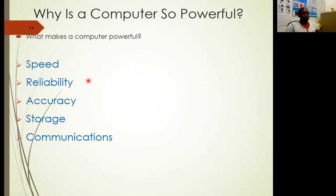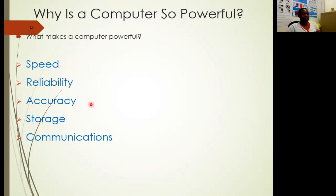So what makes the computer a powerful tool? The computer is powerful because of its speed — it can carry out many calculations or instructions per second compared to a human being. It is very reliable: once you write a proper program, the computer will follow it precisely. It is also very accurate. And it has storage capability and the ability to communicate with other devices, which is why you can access information from one computer over the internet.